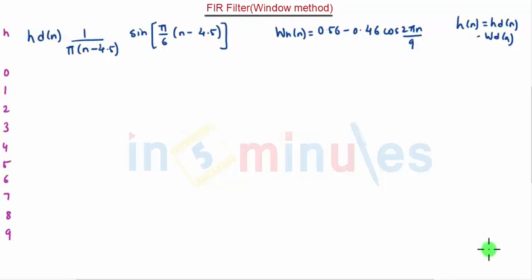So, we will form one table. This is another method to solve this kind of problems. We can form one table where we can calculate first HD of n, then W of n. We will multiply this and obtain H of n. So, this is one kind of tabular method where it becomes simple. So, for different values of n which are given here, we can calculate HD of n, W of n, and finally H of n.